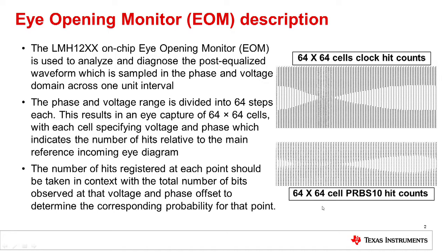The LMH12XX or other high-speed signal conditioning devices' on-chip eye monitor is used to analyze post-equalized signal. Incoming signals go through either 75-ohm coax, 50-ohm PCB trace, or media. After equalization and retiming, the signal is sampled in both phase and voltage domain using a phase DAC and a voltage DAC. One UI of eye capture could be either from midpoint to midpoint or from eye crossing to eye crossing, depending on the device. The key point is that we capture one whole unit interval of the eye diagram.